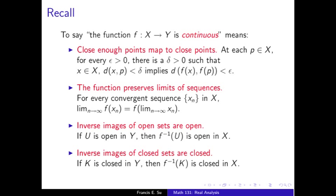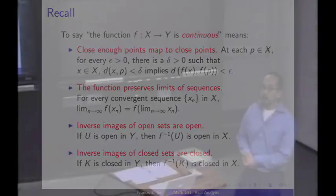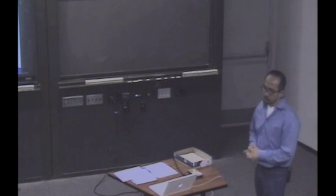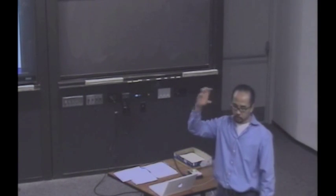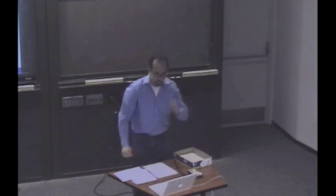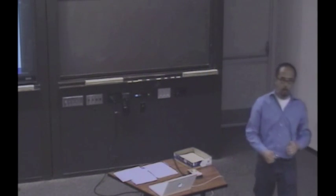So what did we do? Two lectures ago, we introduced this notion of continuity. What does it mean for a function to be continuous? And we talked about various, the metric definition of continuity. We also talked about the sequence definition of continuity. And last time we spent a lot of time talking about a third definition of continuity in terms of open sets.